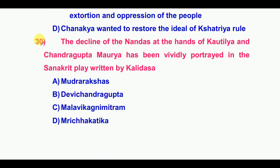Thirtieth question: The decline of the Nandas at the hands of Kautilya and Chandragupta Maurya has been vividly portrayed in a Sanskrit play written by Kalidasa. The answer is option C: Malavikagnimitra.